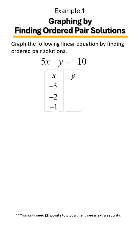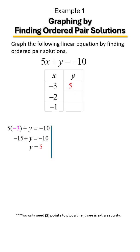Let's start by plugging in negative 3. We have 5 times negative 3 out front, which is negative 15. The next step is to add 15 to each side, and Y equals 5. So when we plug in negative 3 for X, we get positive 5 for Y.